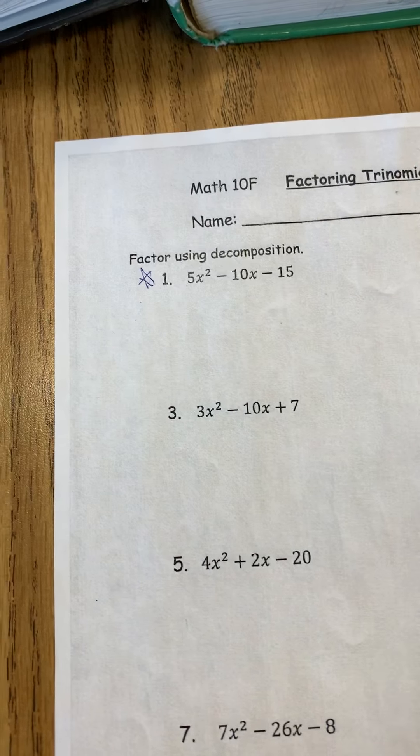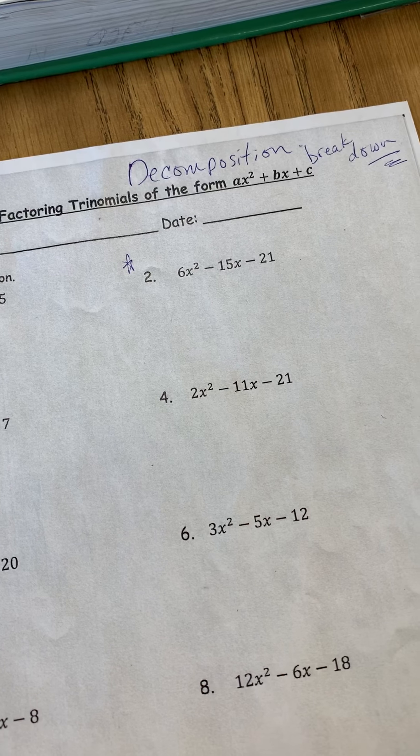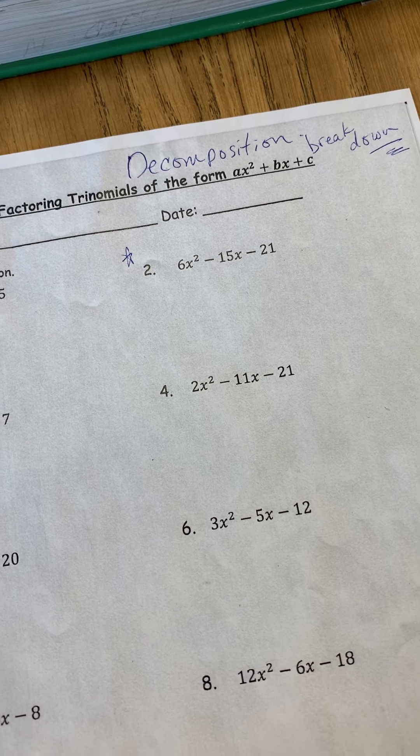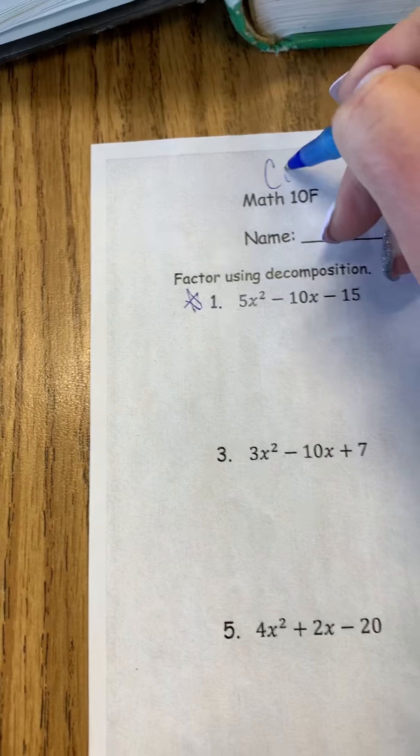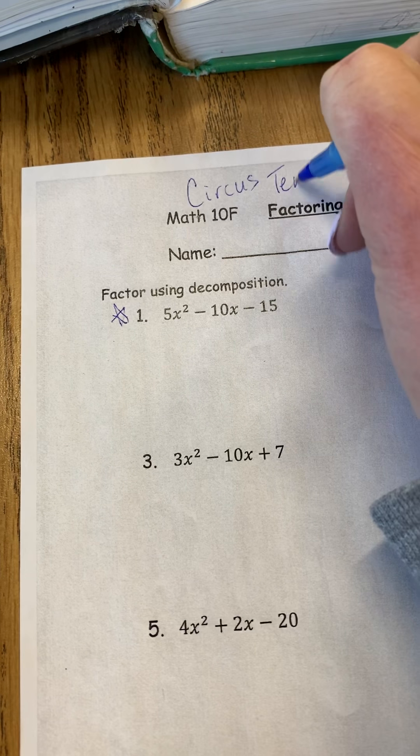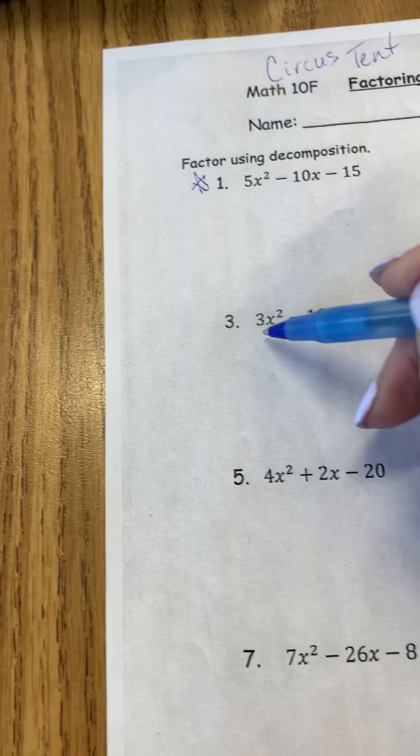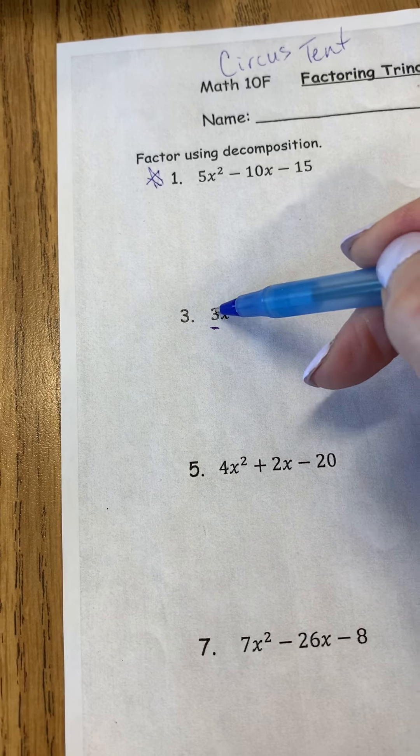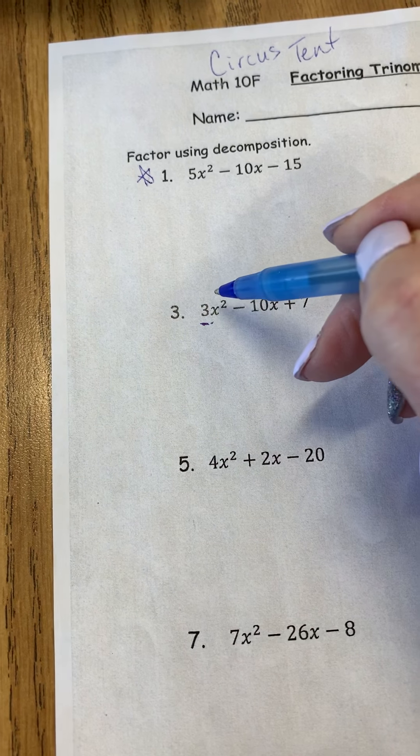So when I teach all the types of factoring, I always give them nicknames, right? So grouping, factoring by grouping is squiggly line. Factoring by product sum, I call salt and pepper. So I call decomposition circus tent. I don't know why I came up with that one, but I do. And so just a little thing to try and get your brains kind of engaged. So you can see that what's different about these questions is that there is a numerical coefficient greater than one sitting out in front in the first term.